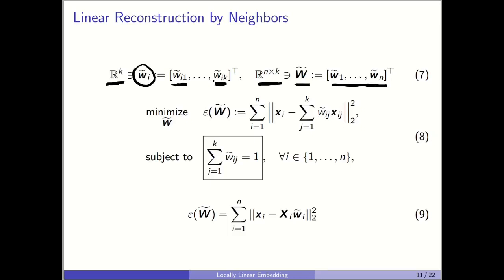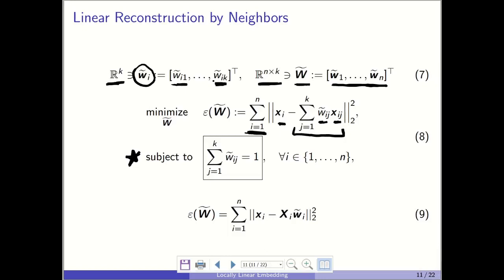The second step says we want to reconstruct every data point by a linear combination of its neighbors using weights. We want x_i to equal a weighted sum of its neighbors, minimizing the squared L2 norm of the difference, summed over all n data points. We have a constraint: all weights for reconstructing every data point must sum to 1. This constraint makes the optimization problem well-defined.